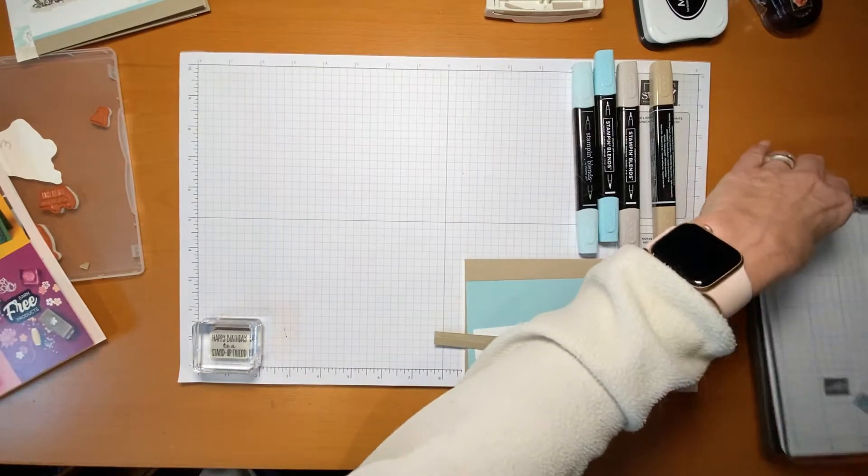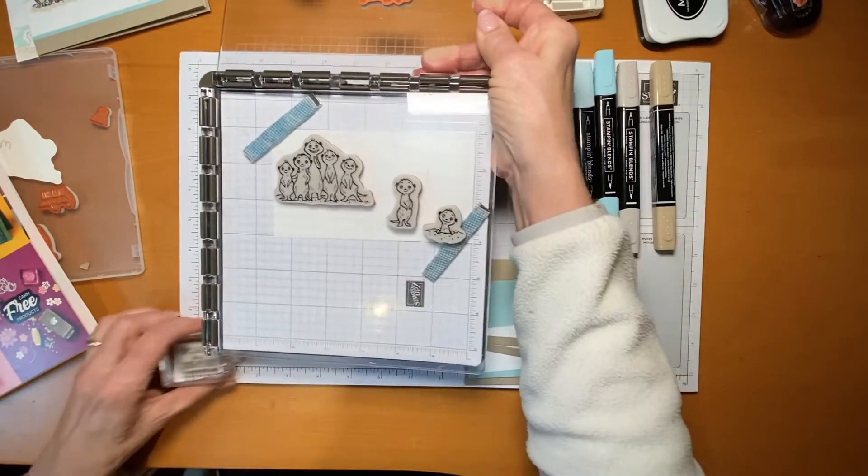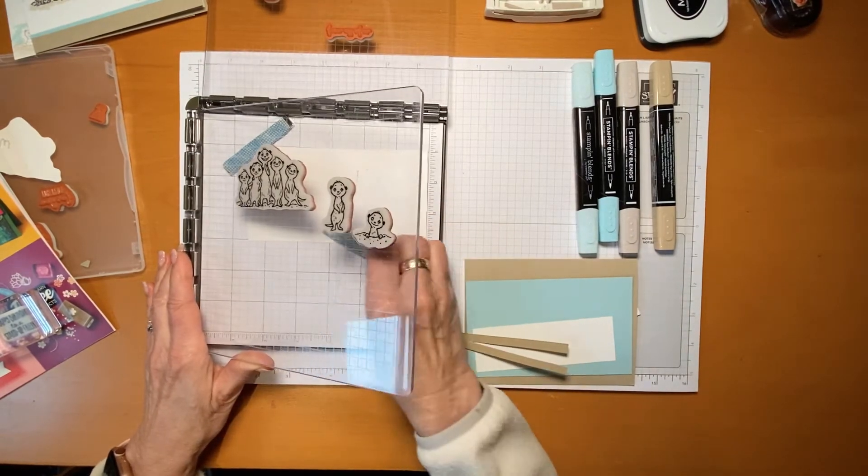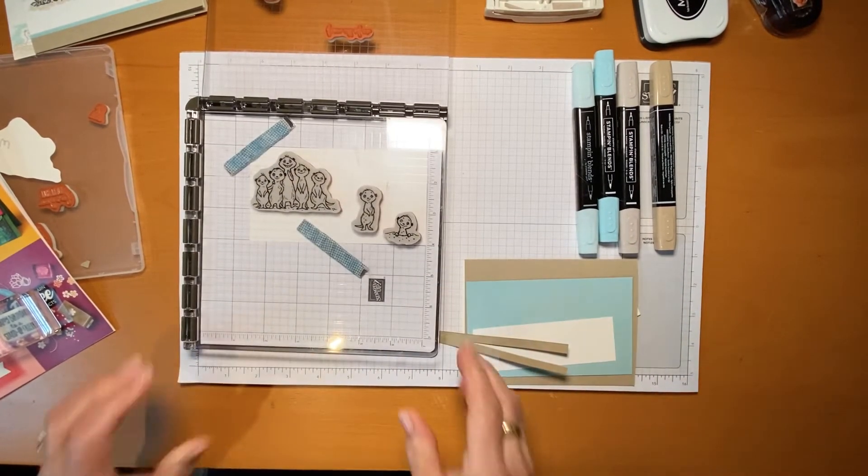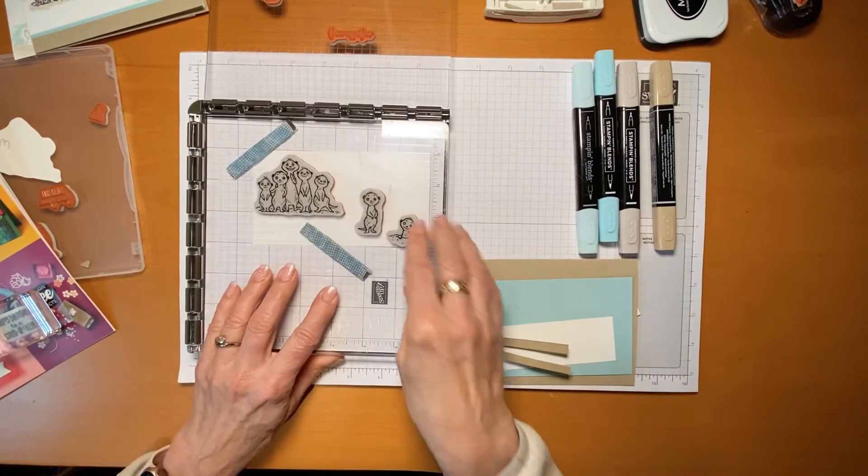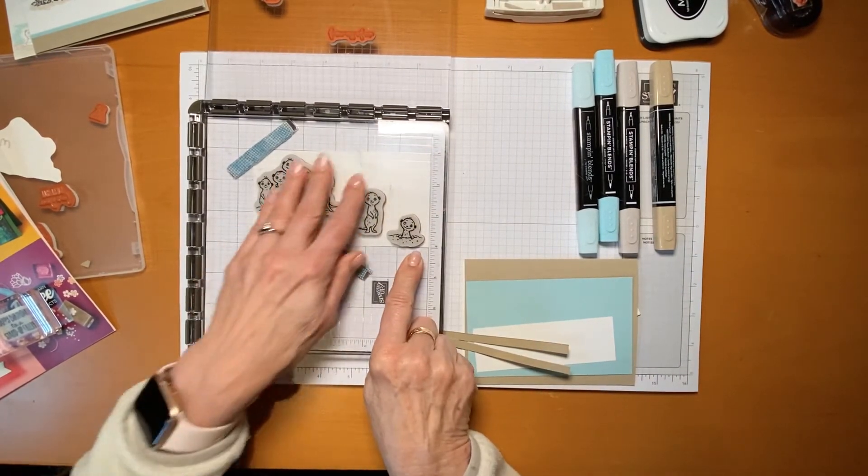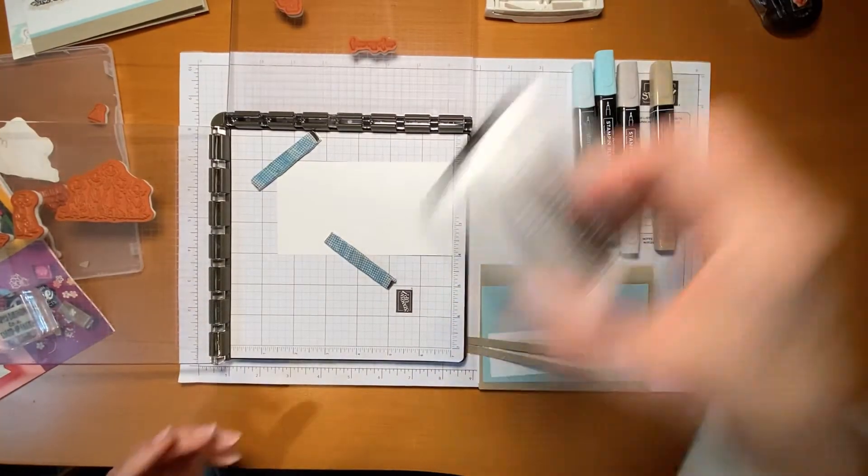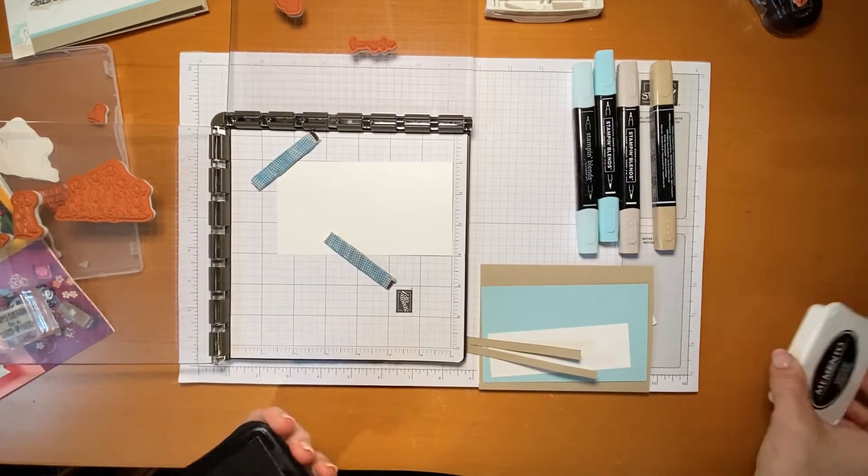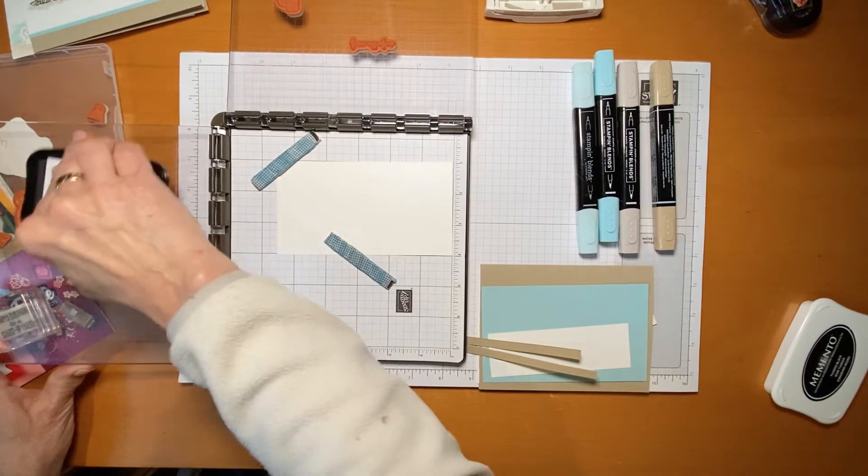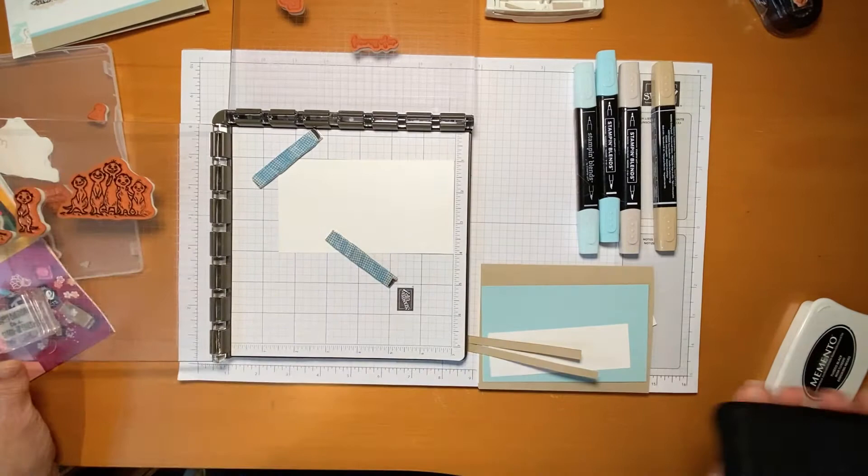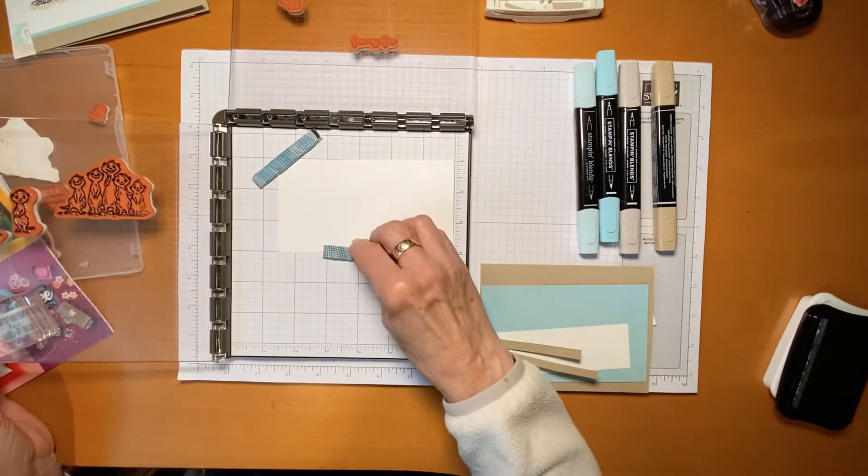I'm going to pull in my Stamparatus. I haven't used this a whole lot and because I'm making videos now, I thought I'd give it a go. So I put all the little meerkats on the same board and I'm going to be stamping them with memento ink because I'm using my blend markers.